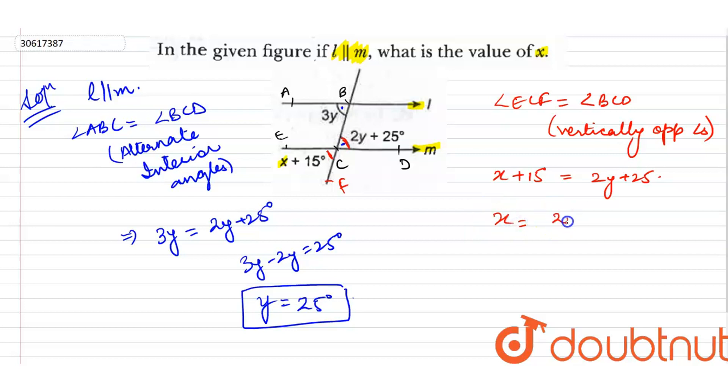So X plus 15 equals 2Y plus 25. Substituting Y equals 25: X equals 2 times 25 plus 25 minus 15, which is 50 plus 10. So X's value is 60 degrees.